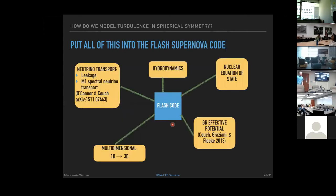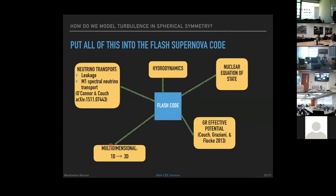This turbulence model is implemented in the FLASH supernova code, which includes a realistic nuclear equation of state, a GR effective potential, DTLS hydrodynamics, and neutrino transport routines including M1 spectral transport. Crucially, FLASH is multidimensional, allowing 1D and 3D simulations from the same code with the same routines and settings, avoiding numerical disparities when comparing results.